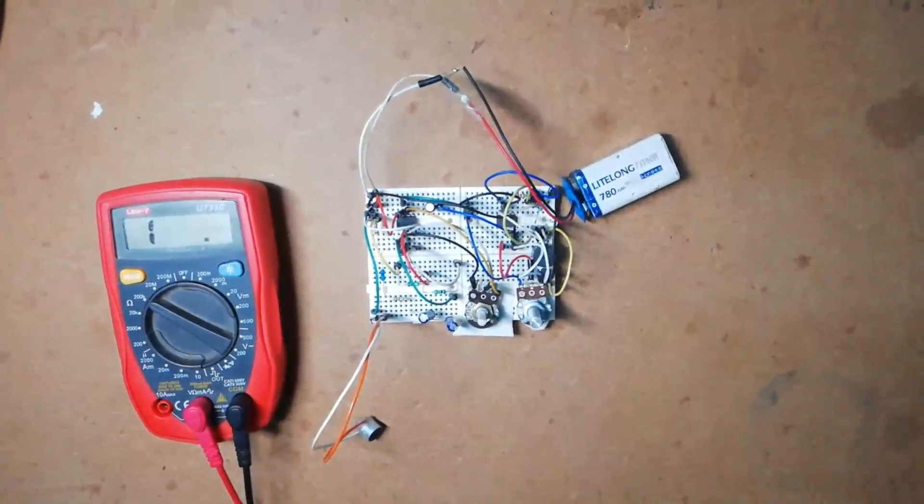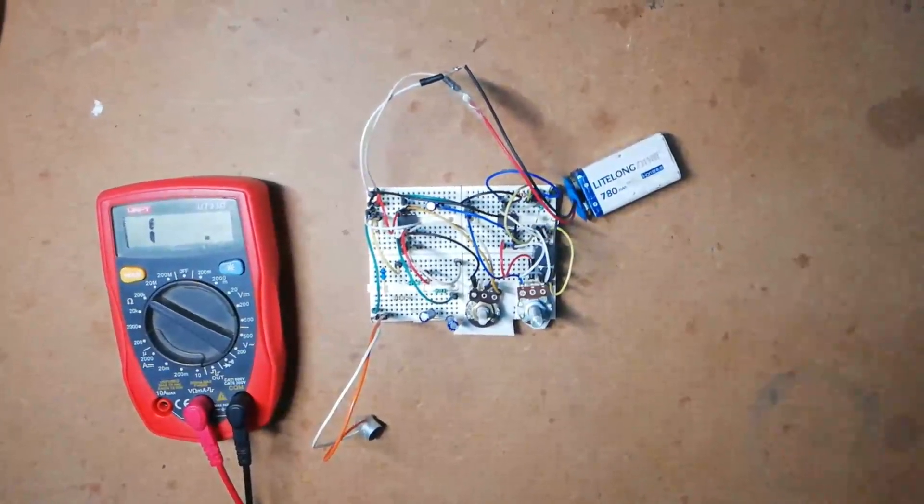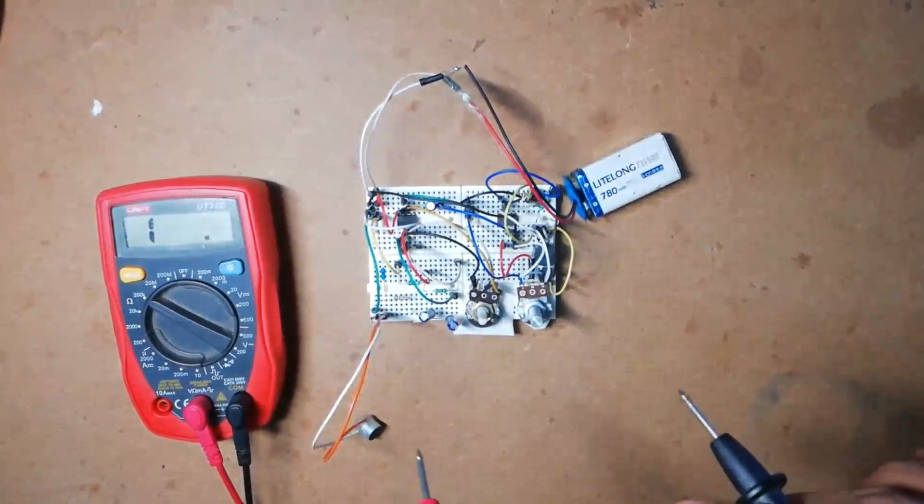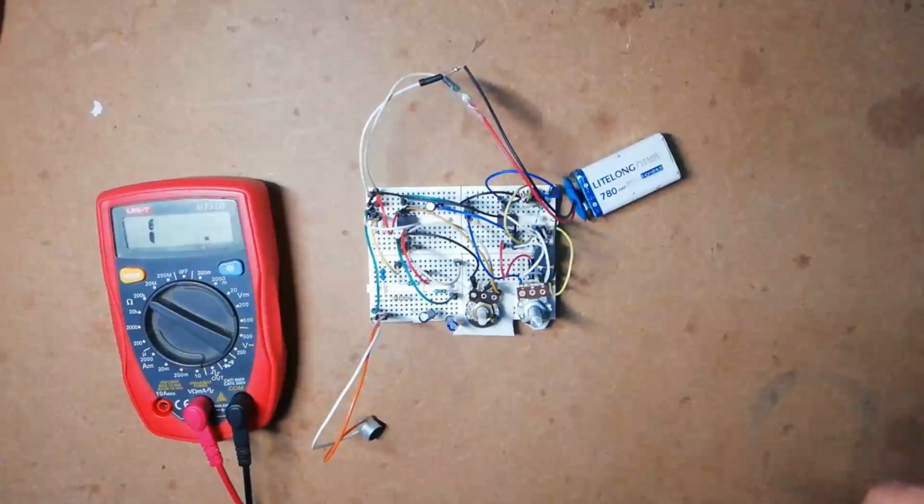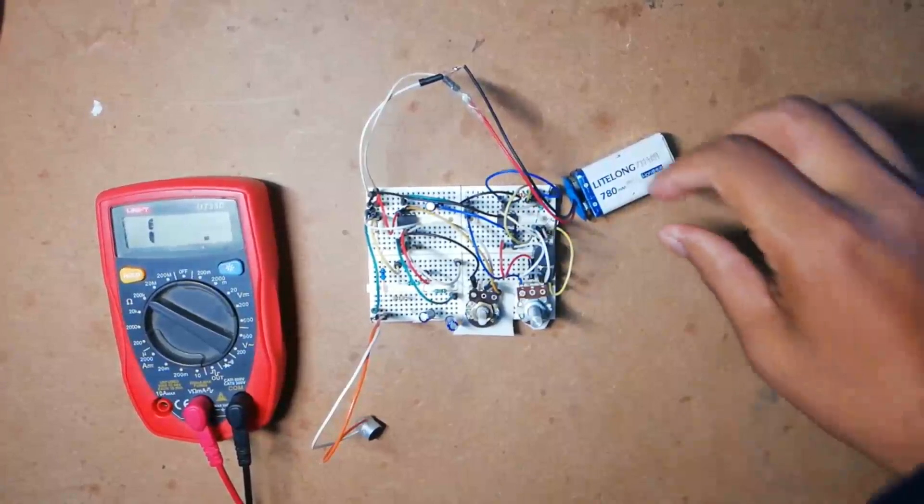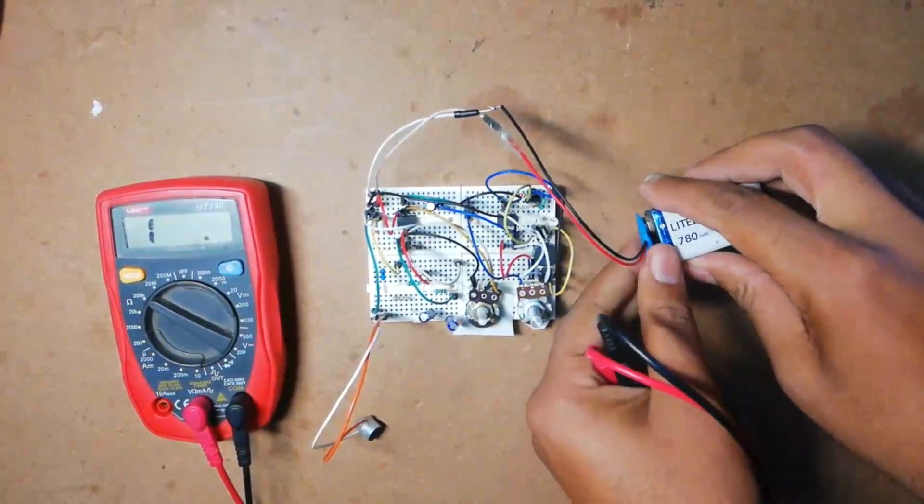Now I am going to show you the resistance between wiper and fixed terminal of potentiometer. For that, I am going to remove this battery first.